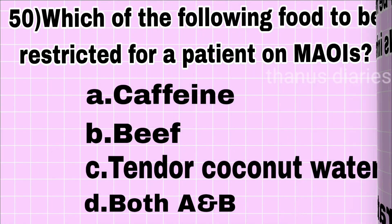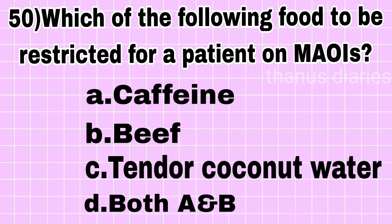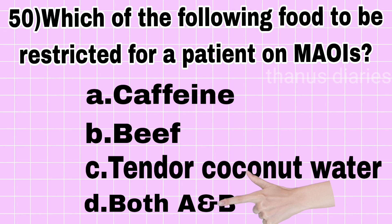And the last question: which of the following foods should be restricted for a patient on monoamine oxidase inhibitors? Caffeine, beef, tender coconut water, or both A and B? The answer is caffeine and beef. Thank you to everyone.